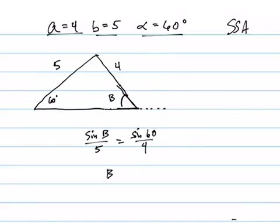This implies that B, so 5 sine of 60 divided by 4 and take the sine inverse of that. Yeah, you get a domain error. You get an error because it can't happen.